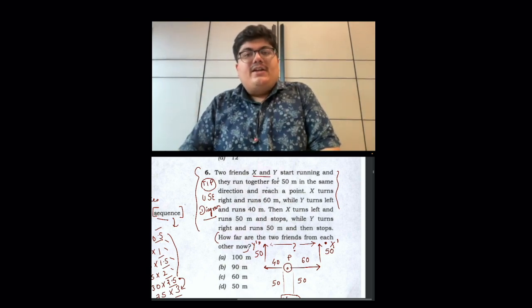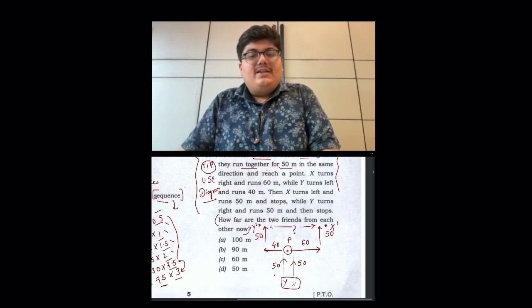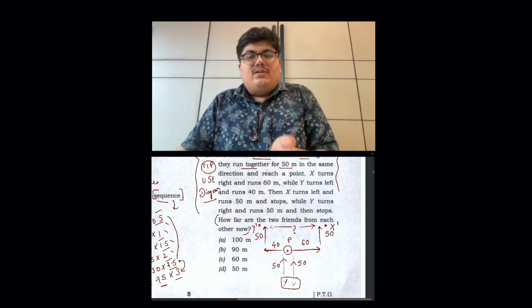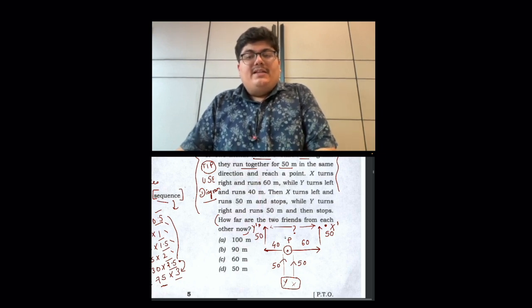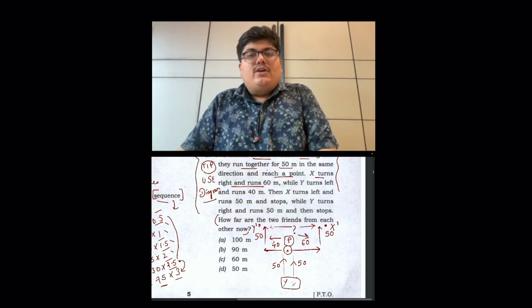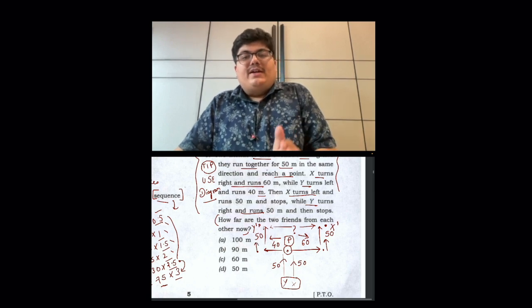Two friends x and y start running. They run together for 50 meters, the same way. Look at the point of order, the point is p. Then x turns right and runs 60 meters. Then y turns left and runs 40 meters. Then x turns right again and runs 50 meters.